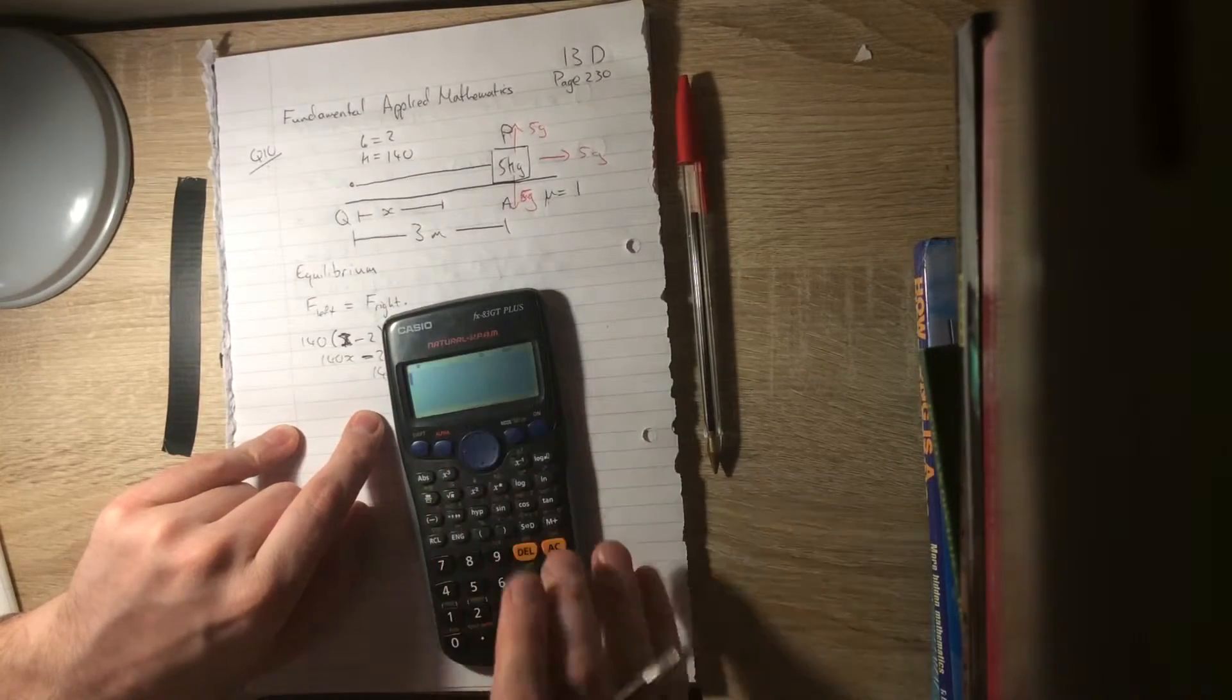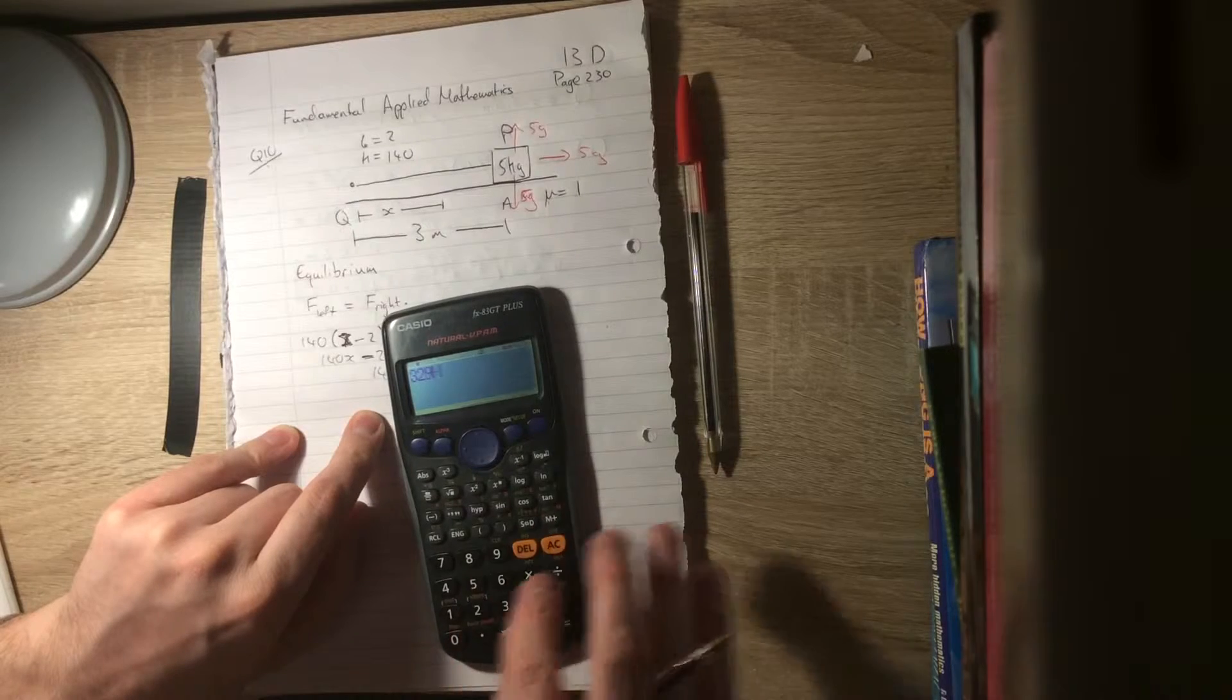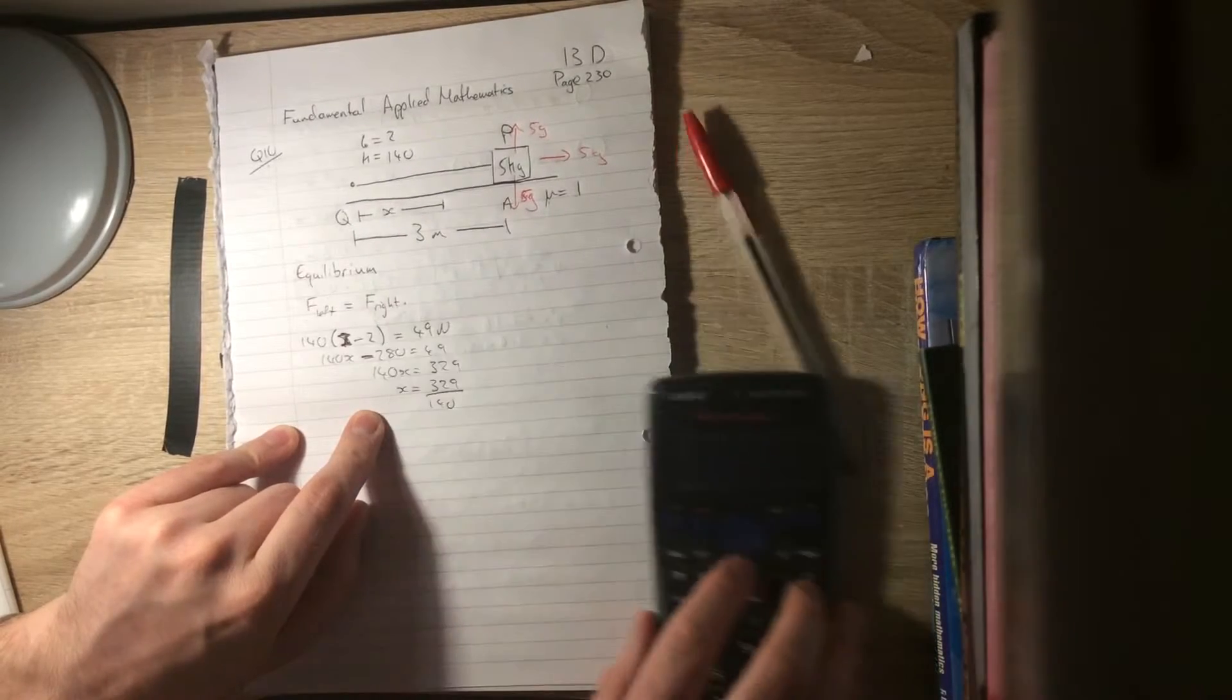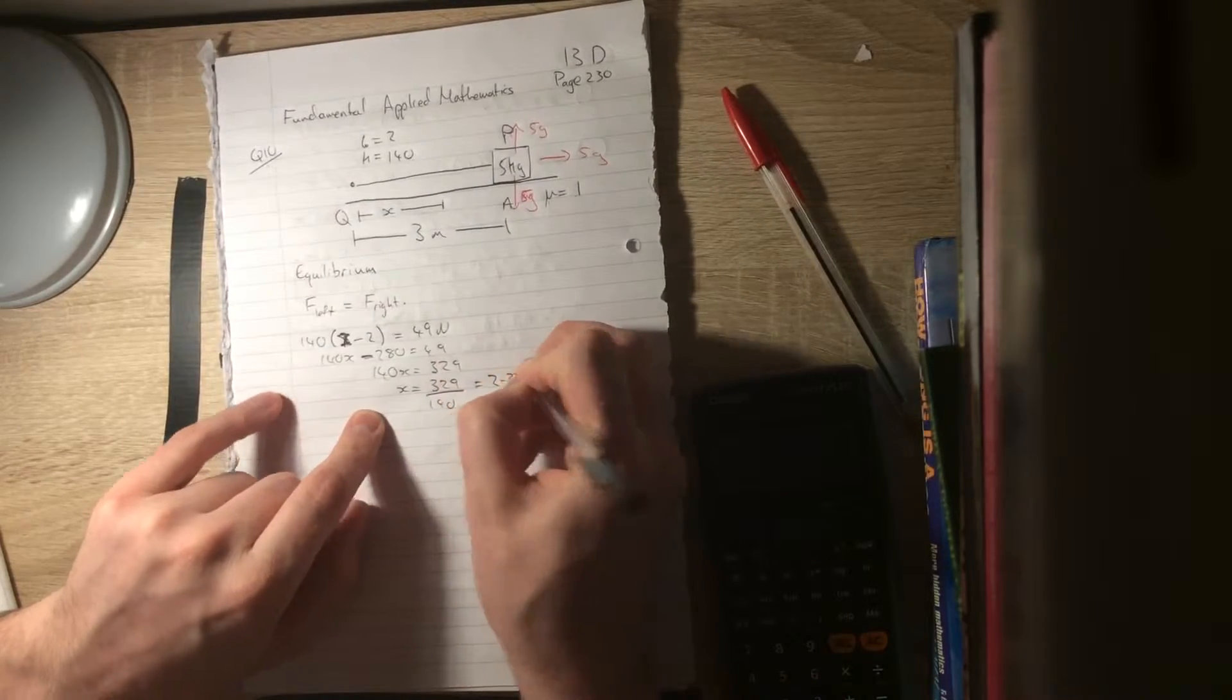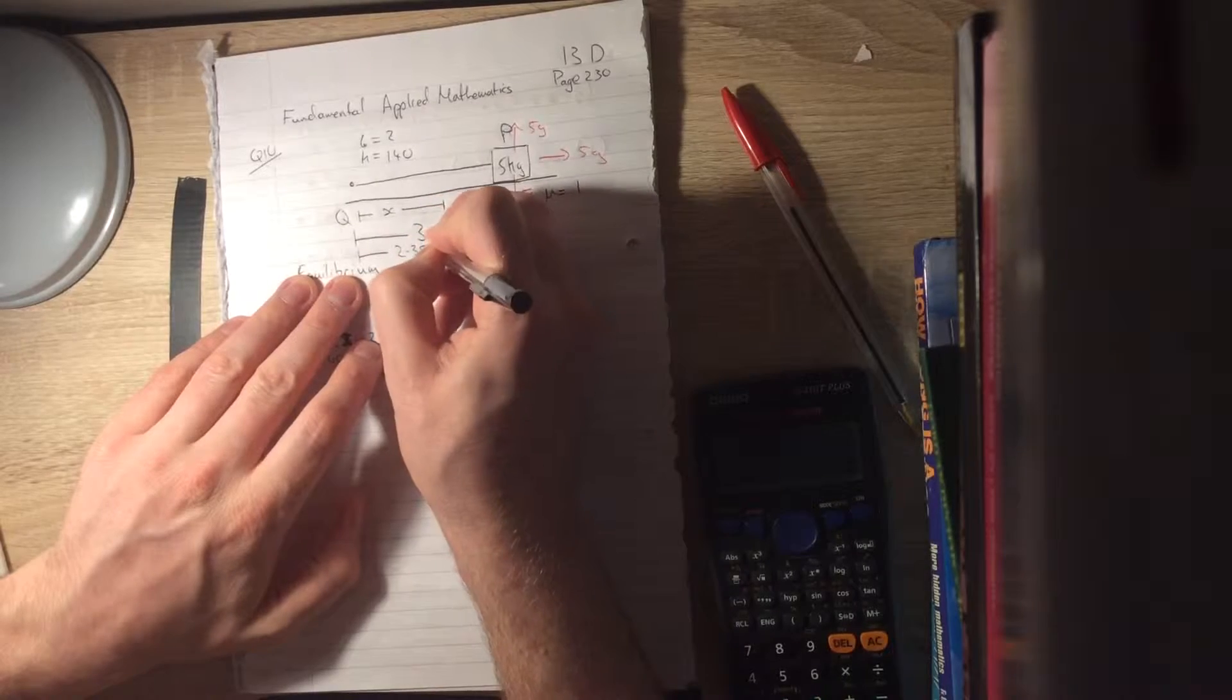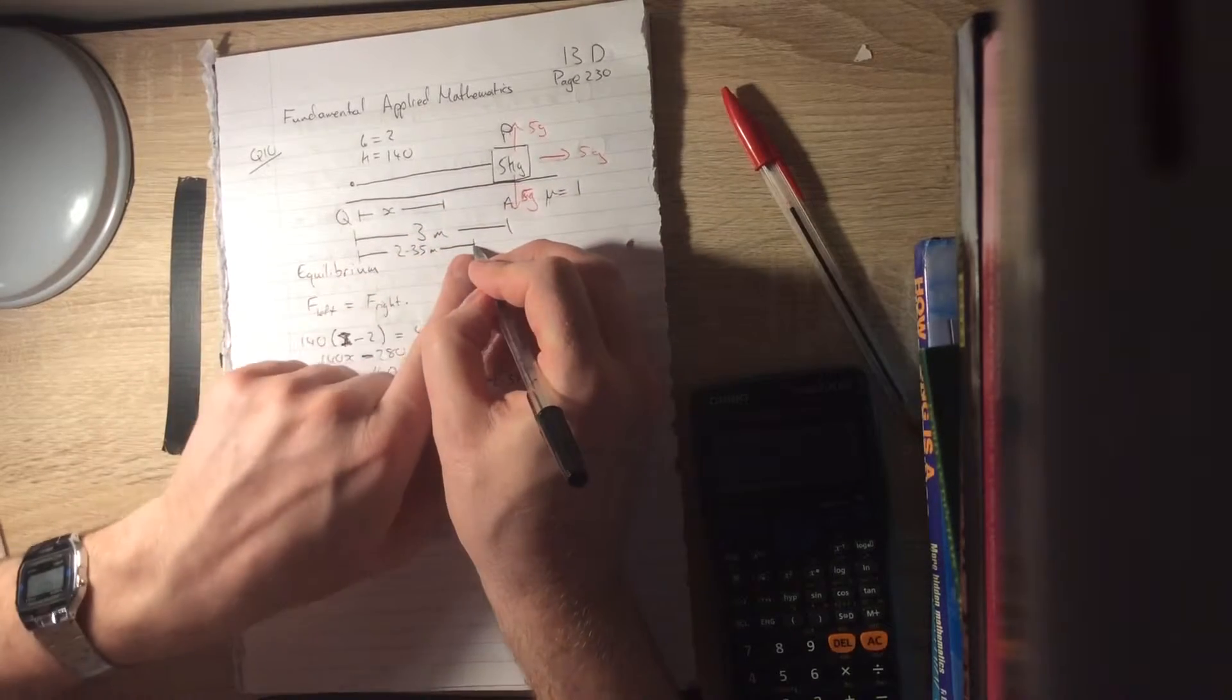So 329 divided by 140 is 2.35. So 2.35 metres along is where our equilibrium point is, somewhere here.